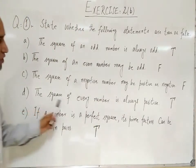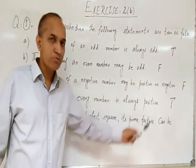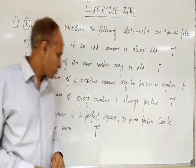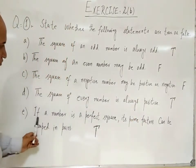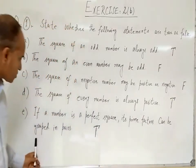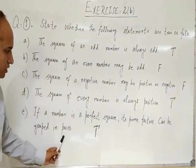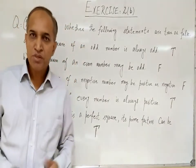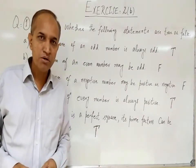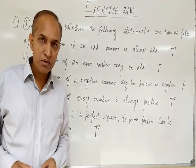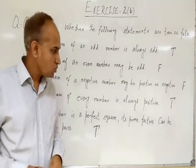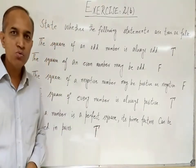In part D, the square of every number is always positive. This is true. In part E, if a number is a perfect square, its prime factors can be grouped in pairs. This is true because if we take the prime factorization of any perfect square number, we get pairs of factors. So this is the true answer.